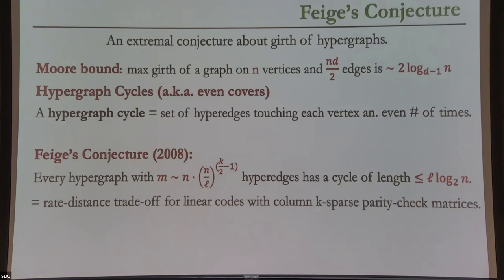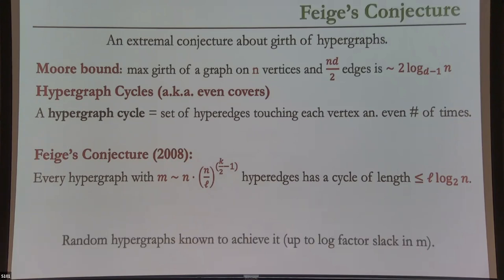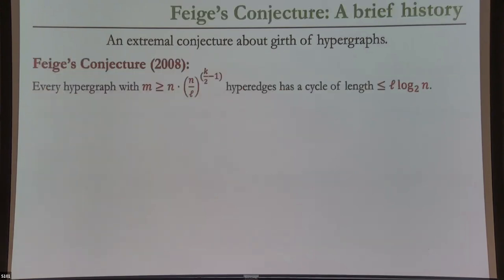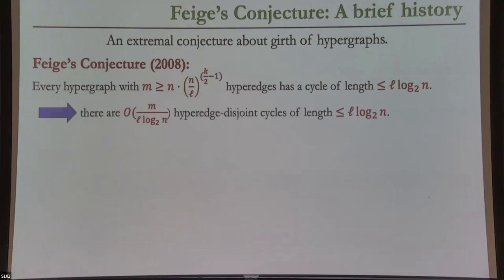For K=3 this trade-off writes out precisely as I described. There are coding theory reasons to care about this — it has interpretations for rate-distance for LDPC codes. The main reason that justified Feige's conjecture at the time was that he was able to prove it for random hypergraphs, which is not very hard using first and second moment arguments.